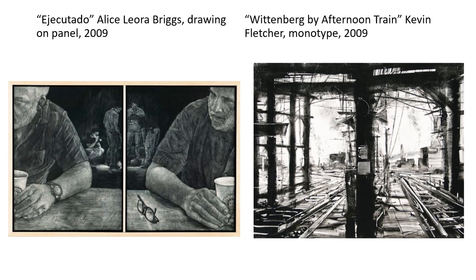The crime scene is kind of in the center — you can tell someone has been hurt or maybe murdered there. And as you're looking at it, your eye automatically comes forward again to the man who is drinking coffee. Don't you want to know who this guy is? Do you wonder what his relationship is to the crime scene? What happened? Did he murder the guy? Is this the guy who was murdered? There's a lot of mystery created with the use of dark value.